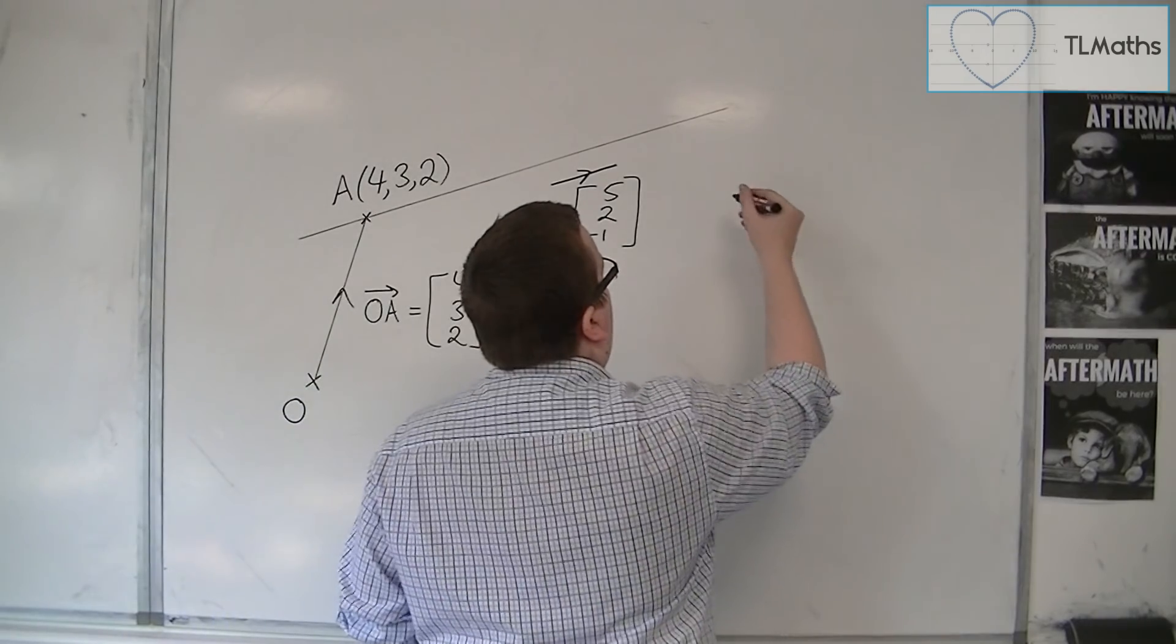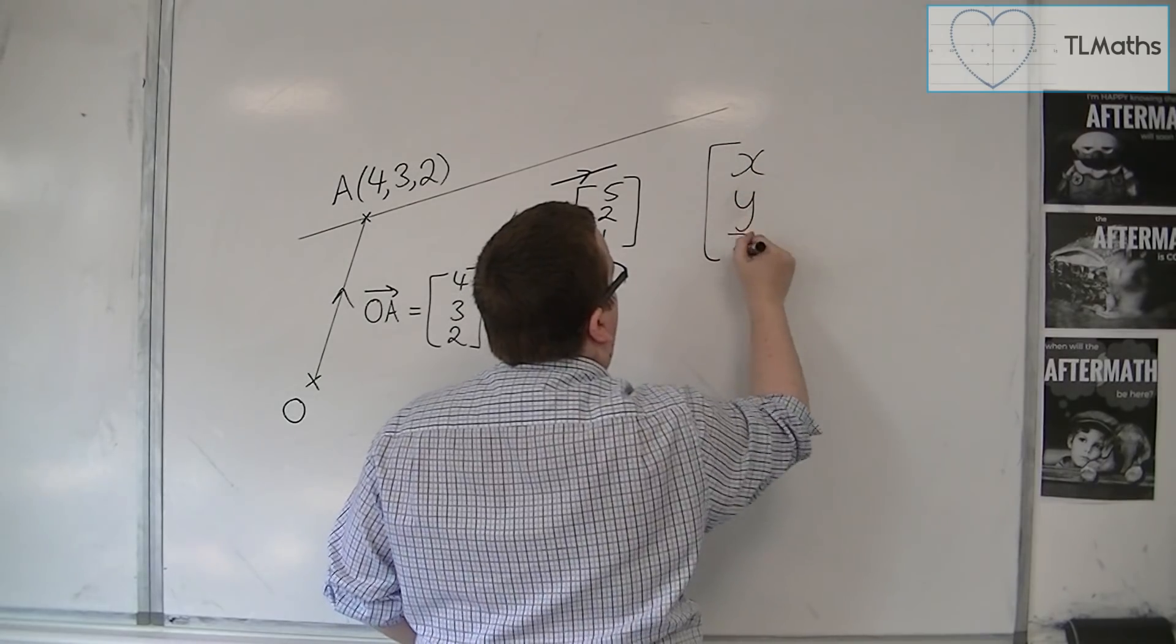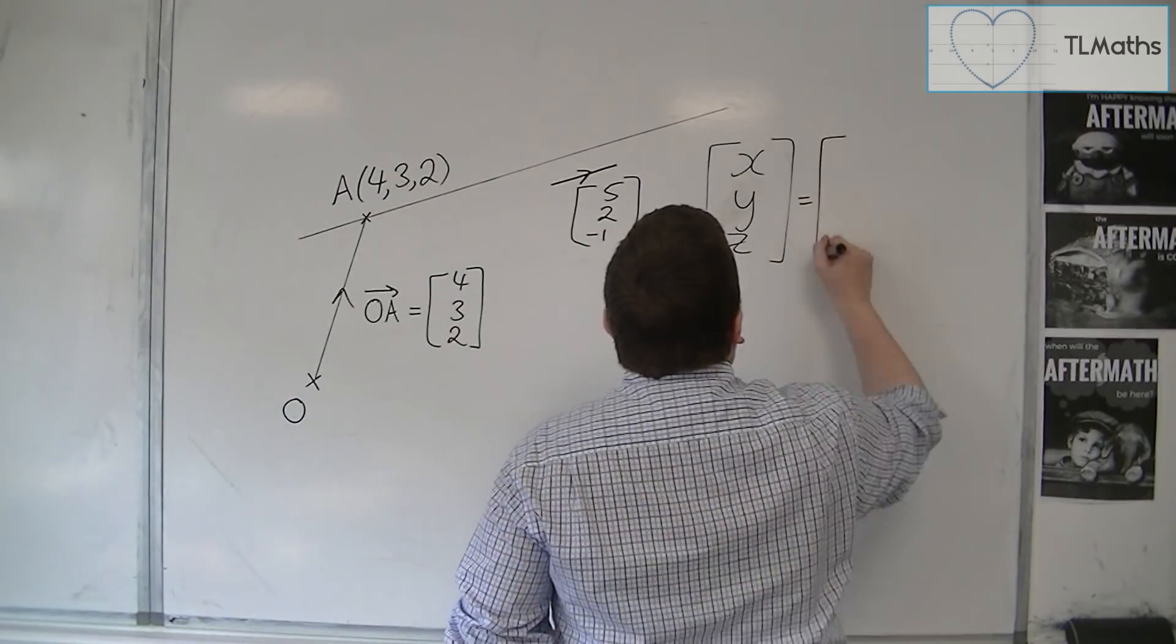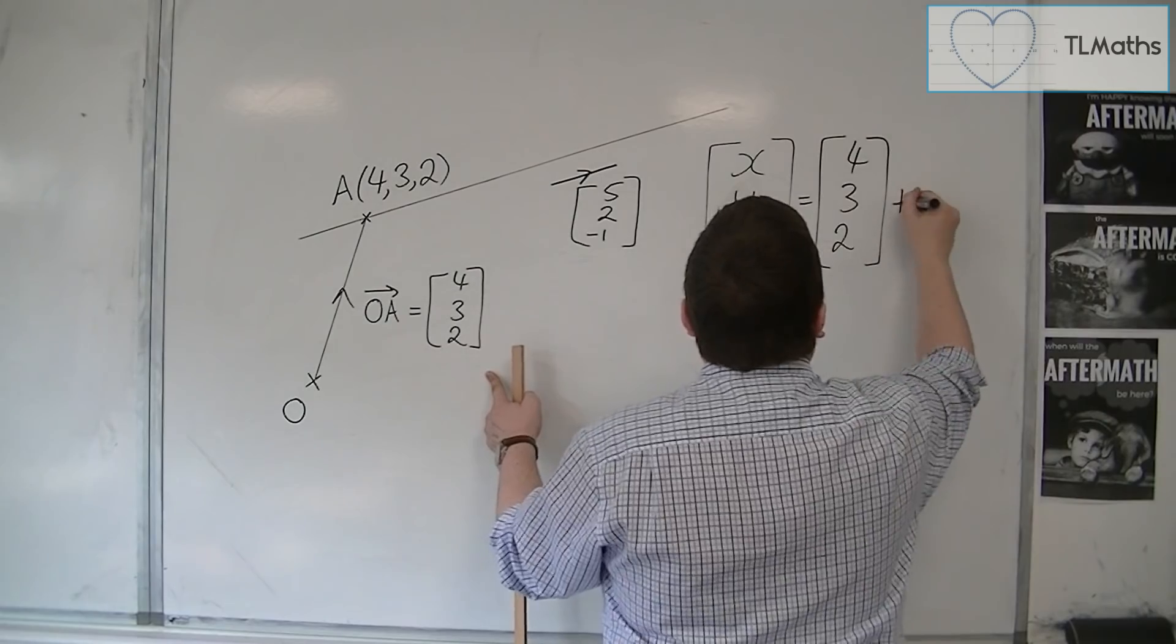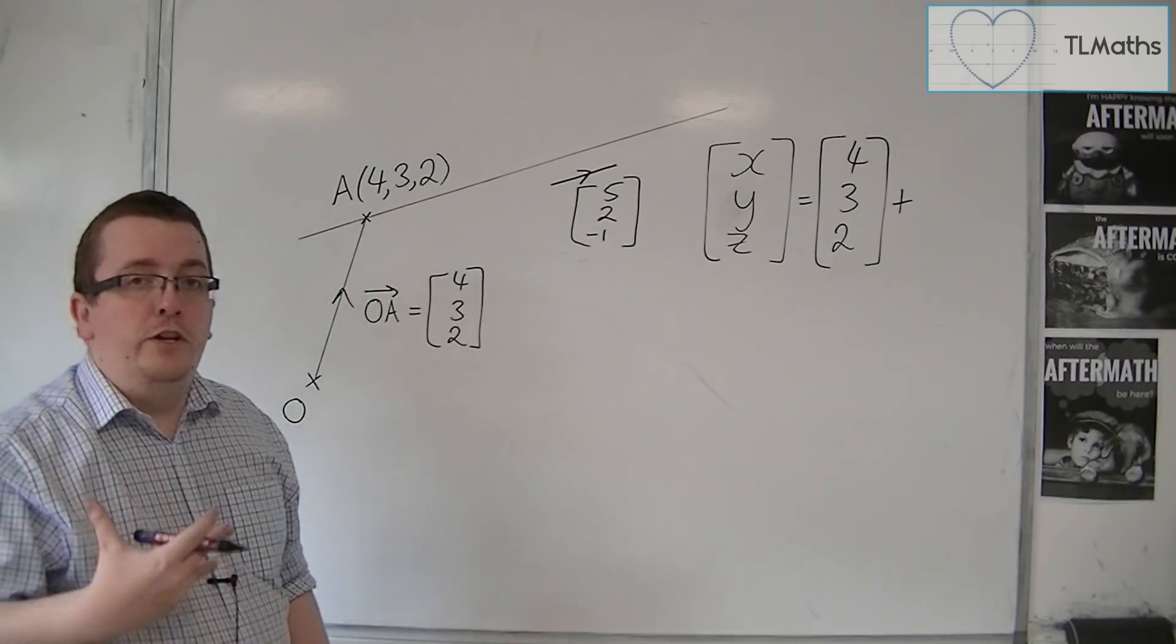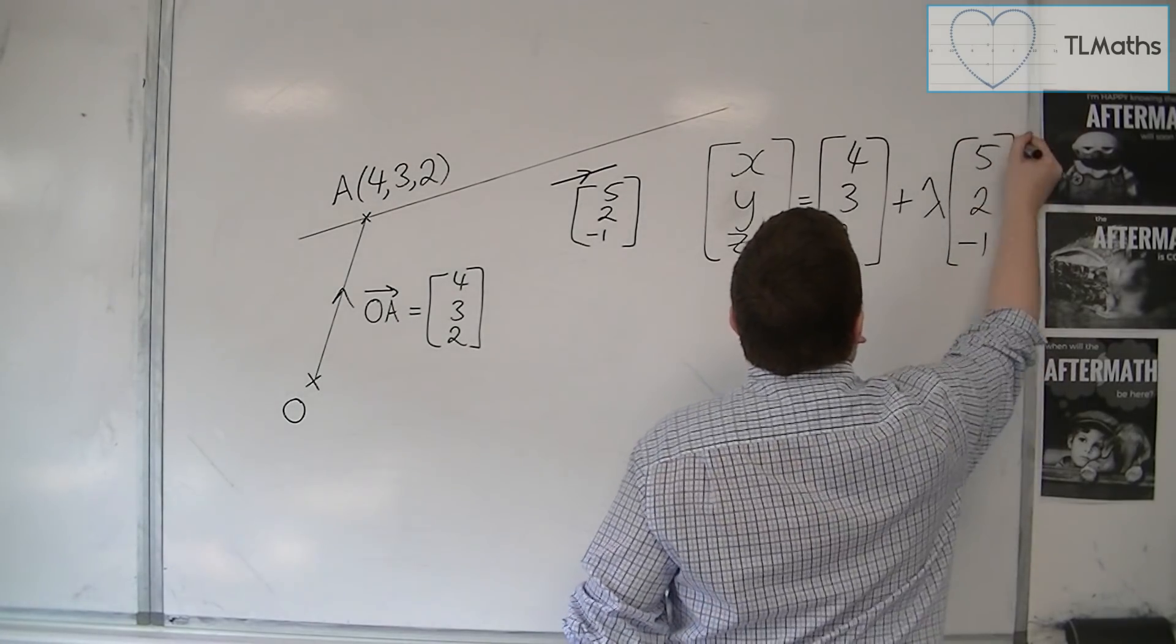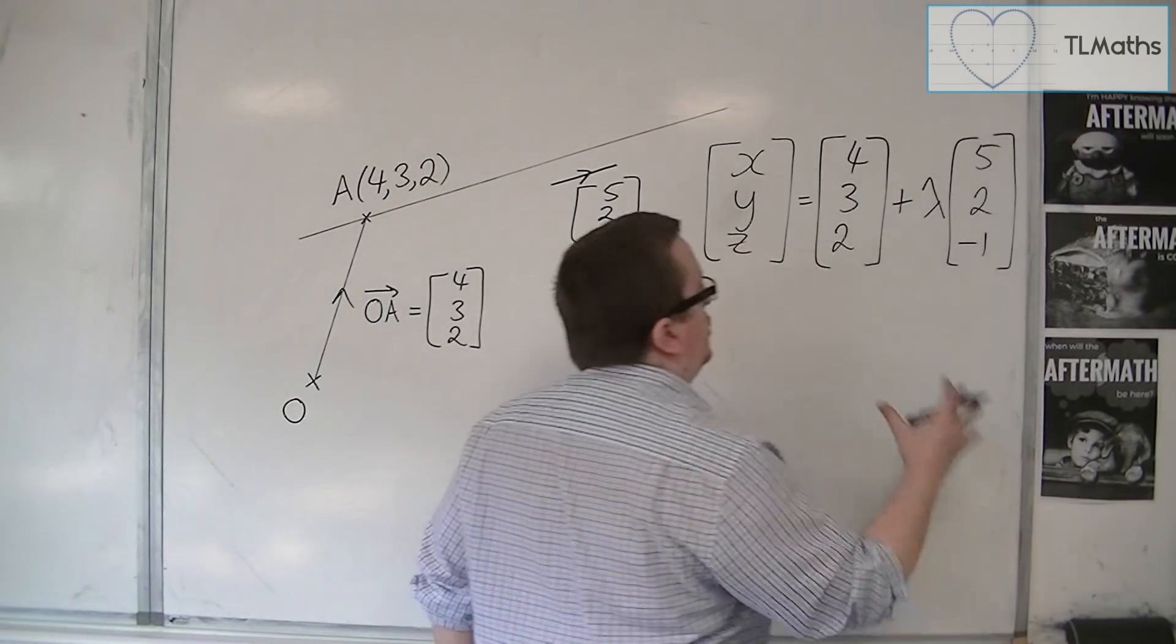So, we can say that any point, any coordinate along that line, let's say it's x, y, z, how to get there is to go from O to A, and then travel a certain amount of 5, 2, minus 1. So let's say that the amount is some lambda, this is a Greek letter lambda, and that is the equation of this line.